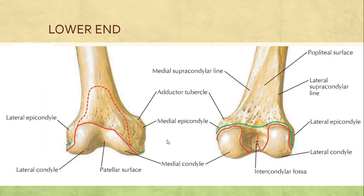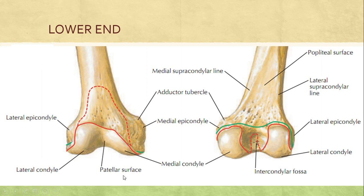The lower end of femur is identified by two rounded structures called the two condyles — the medial condyle and the lateral condyle. These condyles have two important parts: the articular part and the non-articular part. Anteriorly the articular part is more pronounced on the lateral condyle than the medial one, and it is called the patellar surface as the patella is attached here. Inferiorly and posteriorly the articular part is attached with the tibia as part of the knee joint.